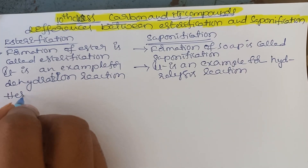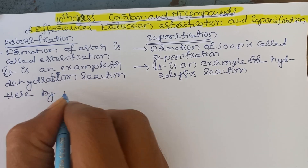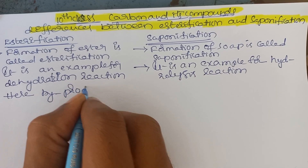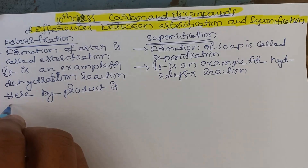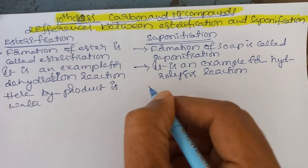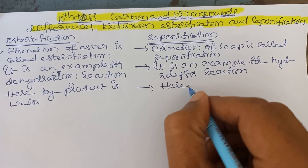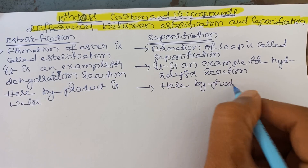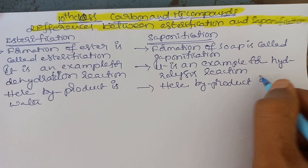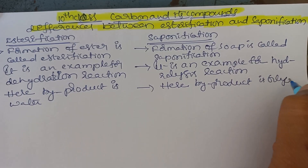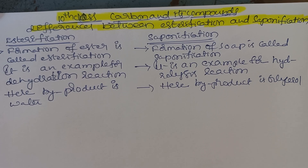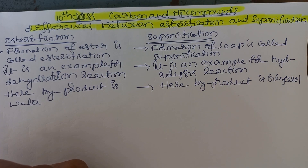In esterification, the byproduct is water. In saponification, the byproduct is glycerol.